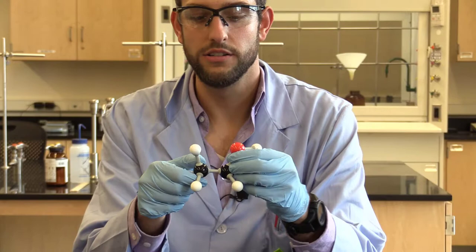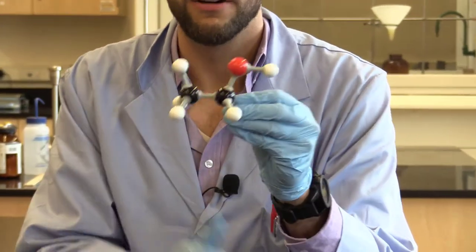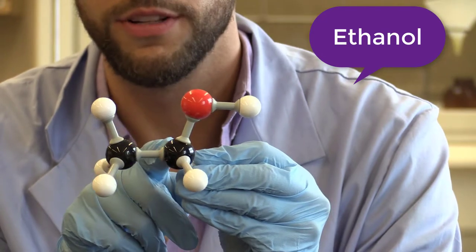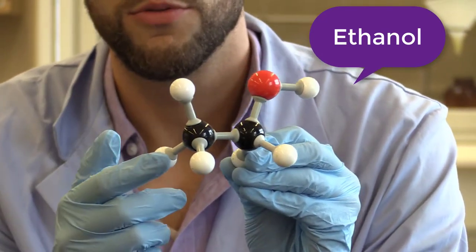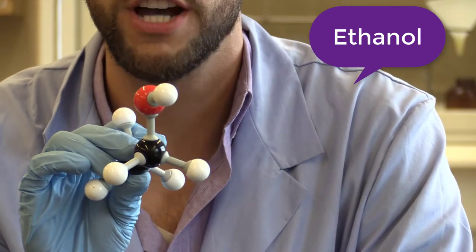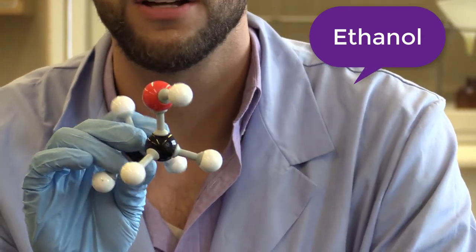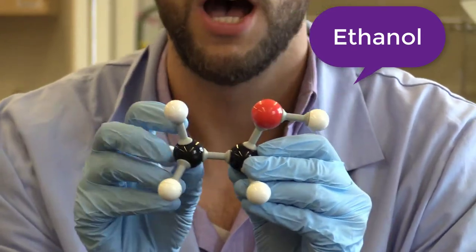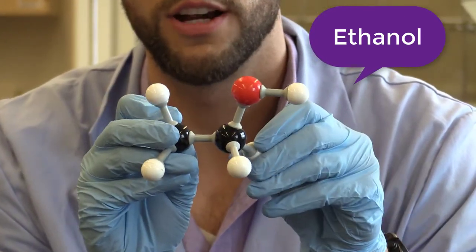So for our first model, ethanol, you have your two carbons, three hydrogens there, one, two, and another three hydrogens there for a total of six hydrogens. And then our one oxygen. We also have an alcohol functional group right there as well.